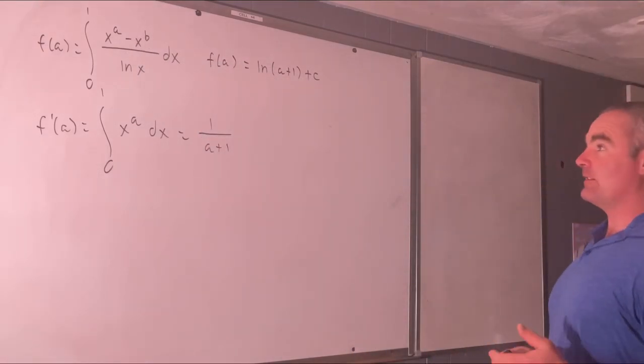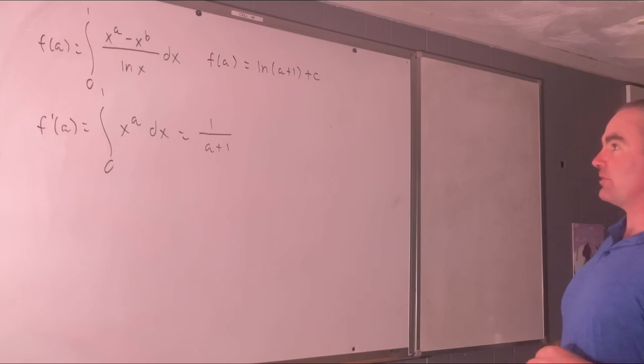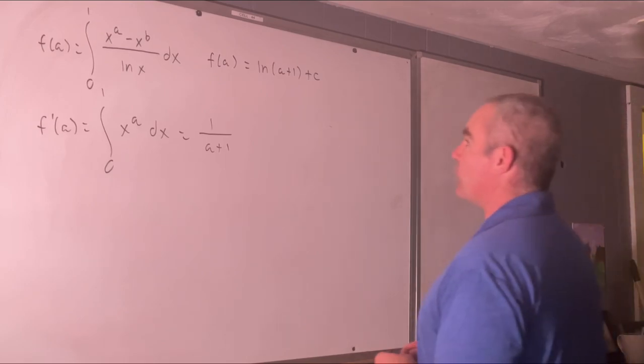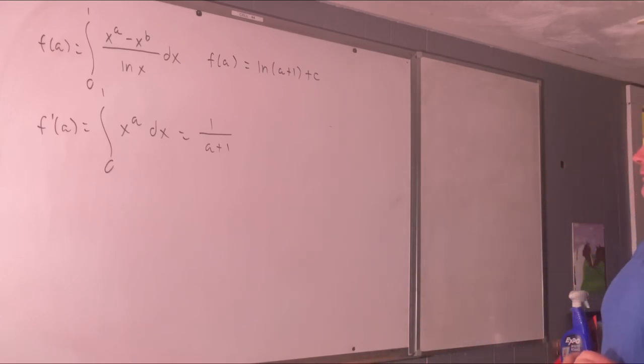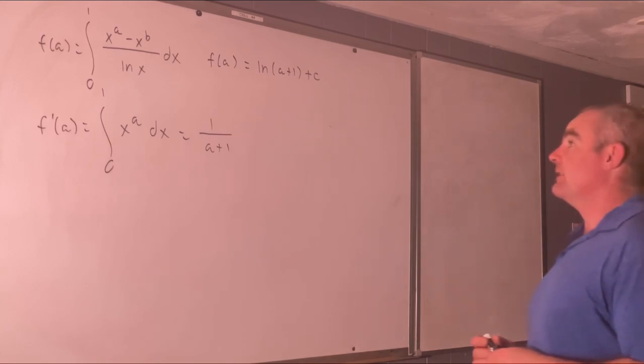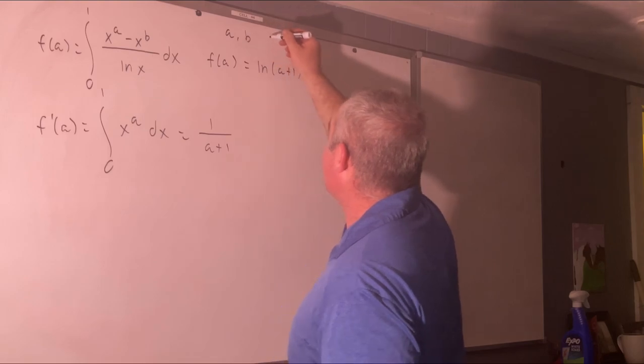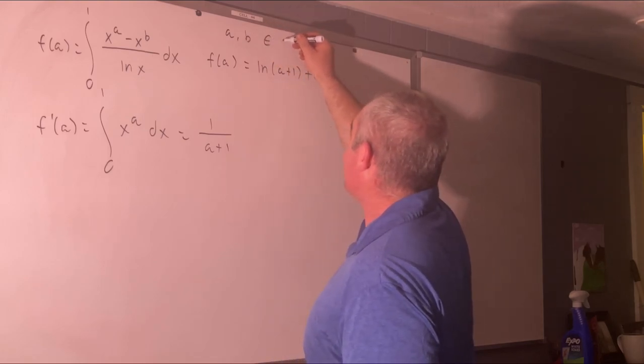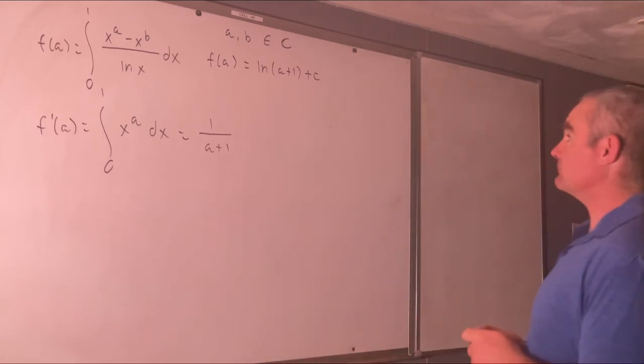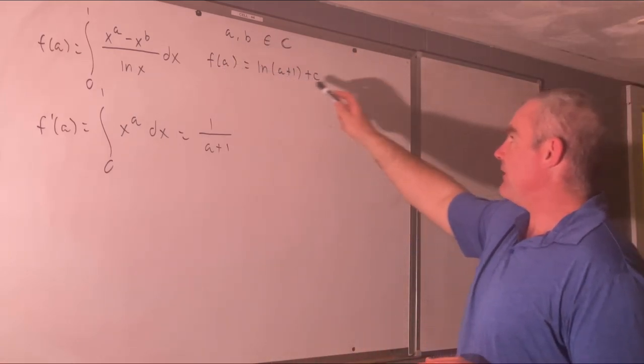We'll get to that later but there's actually only two restrictions on a and b. It will converge for all other values of a and b regardless of whether they are real, imaginary, or just complex. So this is actually for a and b in the complex numbers. So anyway there's our f of a. It's equal to the natural log of a plus 1 plus c.